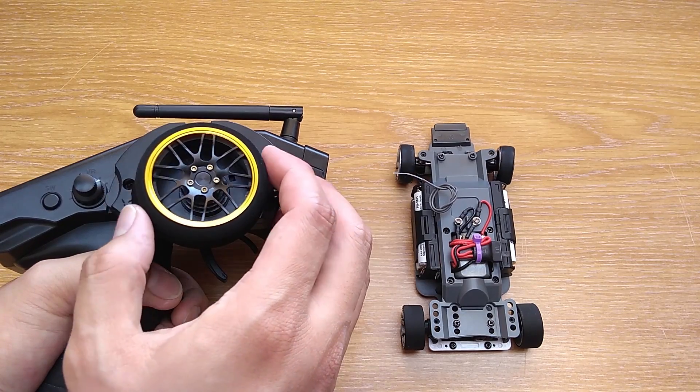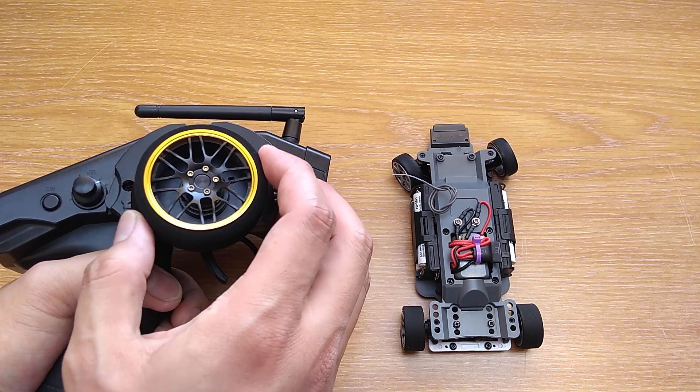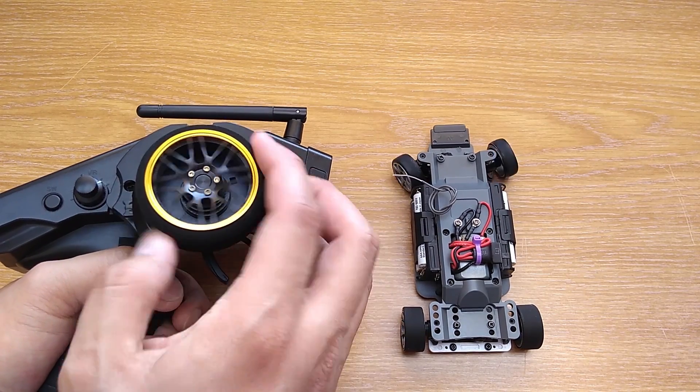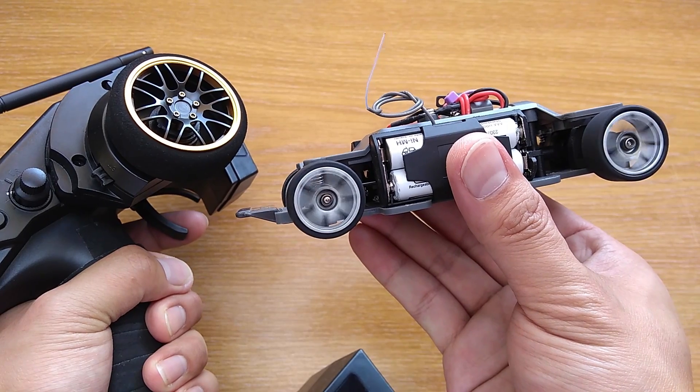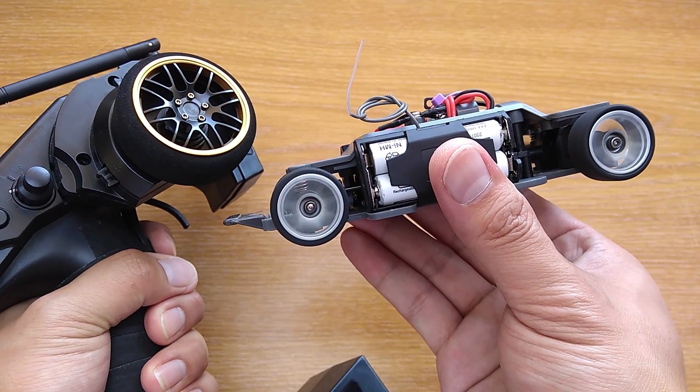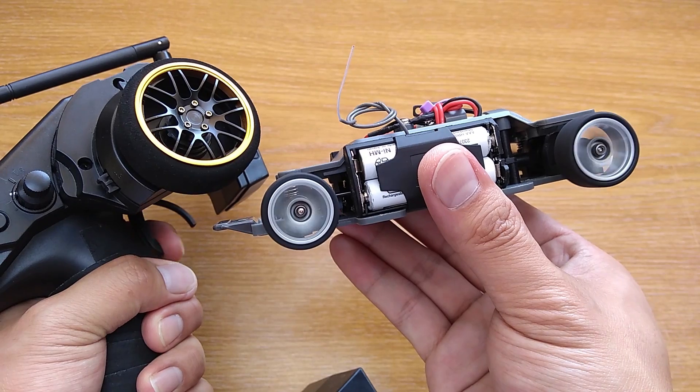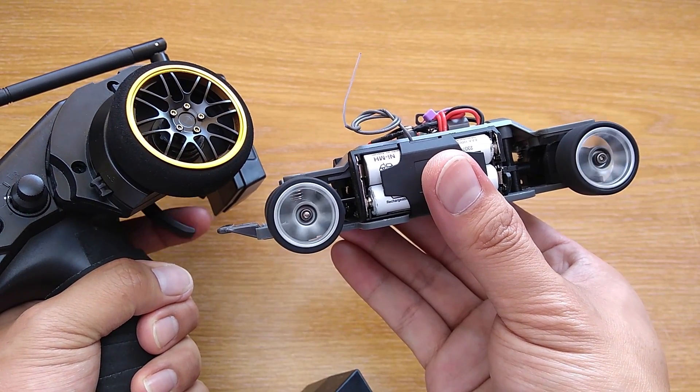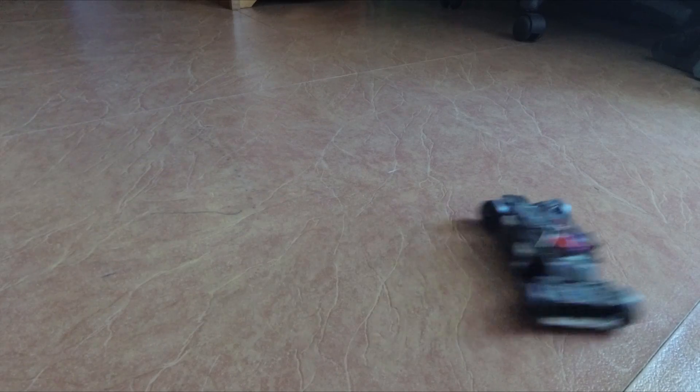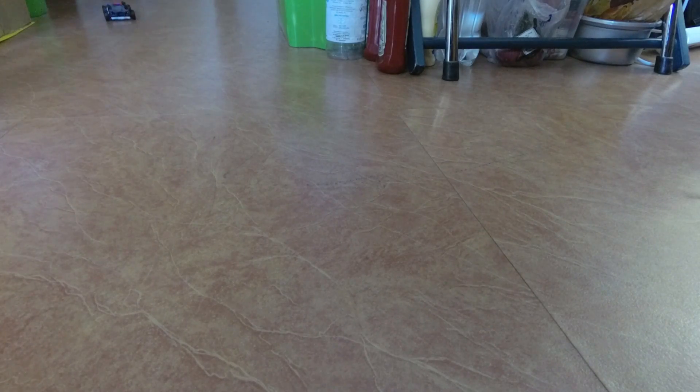You can see that now the steering is precise and also faster than before. Throttle is also pretty smooth. I actually find this ESC works better with nickel metal hydride batteries than 2 cell lipo battery. Now the car is much better to drive. The turning circle is about 50cm and more importantly equally from left to right. The speed is still slow but I find it perfect for my tiny room. Now I can drift with confidence.